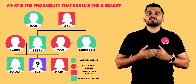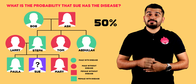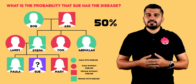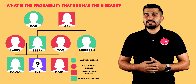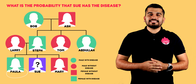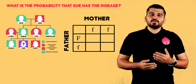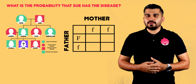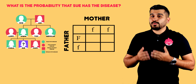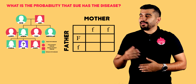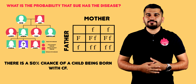What is the chance that Sue has the disease? The chance is 50%. Sue's mother Steph has cystic fibrosis, but her father Larry does not. However, Larry must be a carrier because Sue's sister Paula has the disease and it is caused by a recessive allele. So if we were to look at this as a Punnett square, Sue's mother would have two recessive alleles, and Larry would have one dominant and one recessive allele. Completing the Punnett square, we can see there is a 50% chance that a child born to Steph and Larry would have cystic fibrosis.